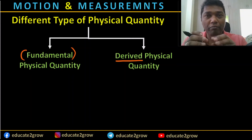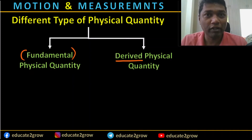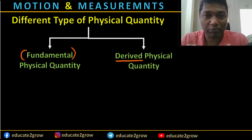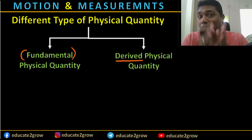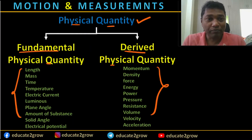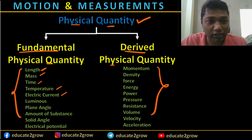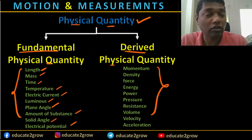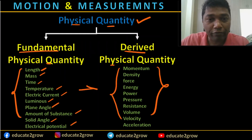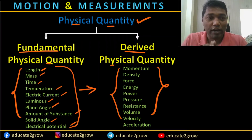Water, milk, sugar, and tea powder are all different and independent — they are fundamental quantities. When we put them all together and make tea, there is one cup of tea, which is a mixture of all four. That one cup of tea is the derived quantity. Similarly, from our list of 20 physical quantities, length, mass, time, temperature, electric current, luminosity, plane angle, amount of substance, and electrical potential are fundamentals. The rest are derived from these fundamentals.